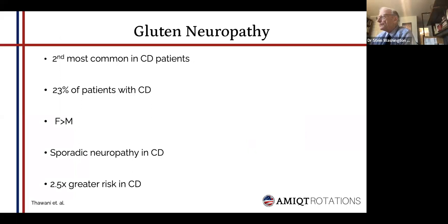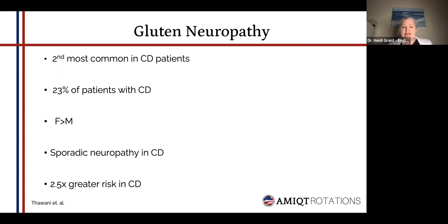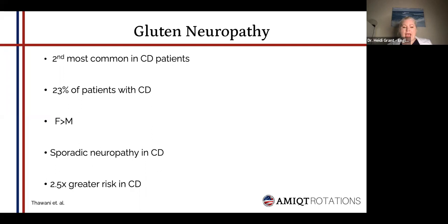So I'd like to move on now to gluten neuropathy — this is a bit of a whistle-stop tour because we only have 20 minutes. Gluten neuropathy is the second most common condition that you'll see in celiac disease patients. 23% of patients with celiac will exhibit neuropathy at some point in their lives, again females a little bit more than men. Typically what's been seen is sporadic neuropathy.